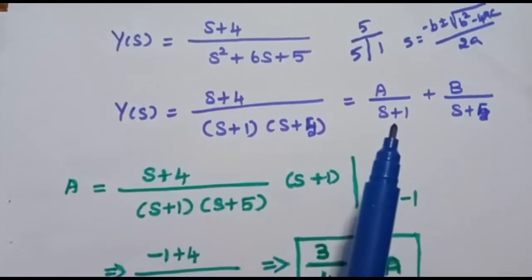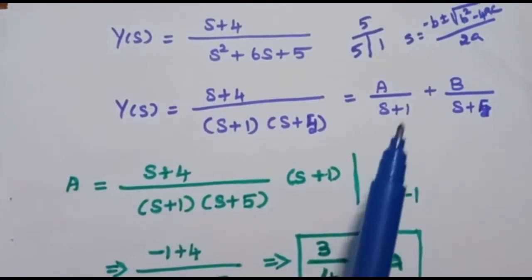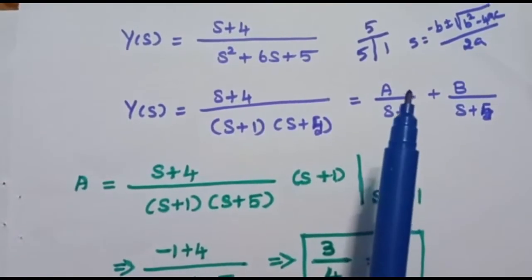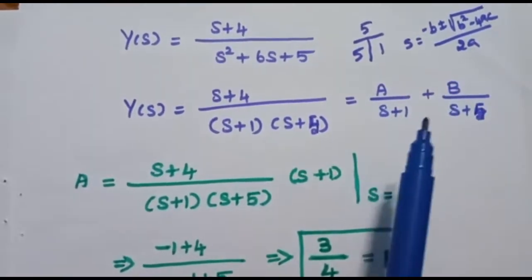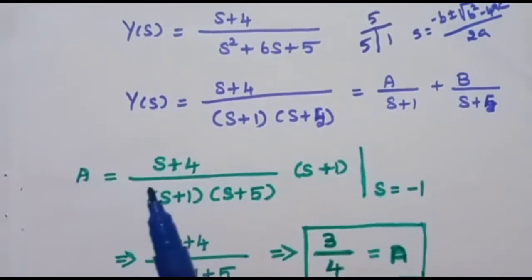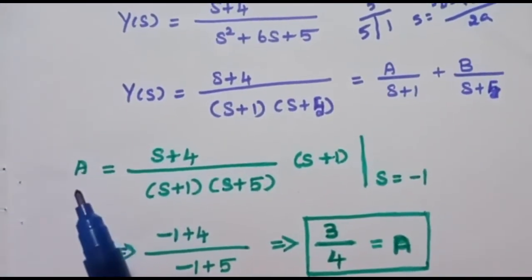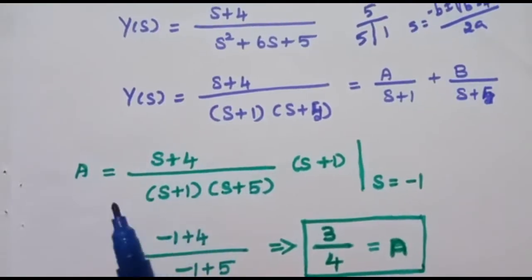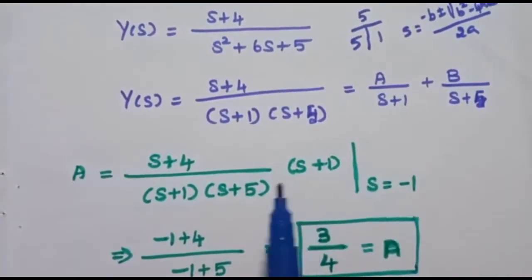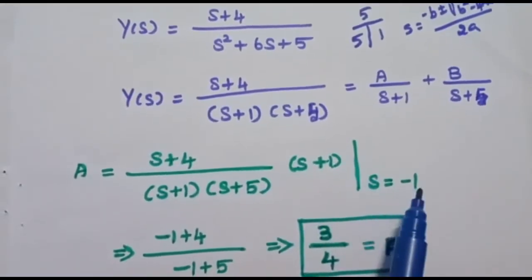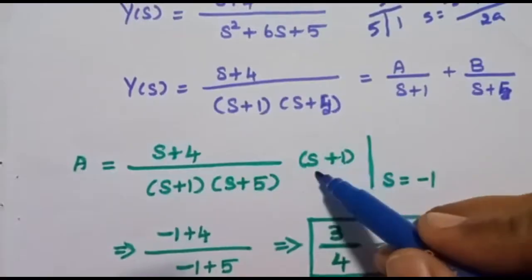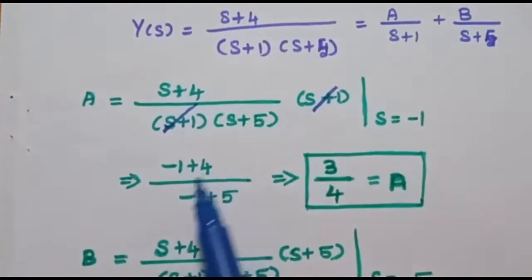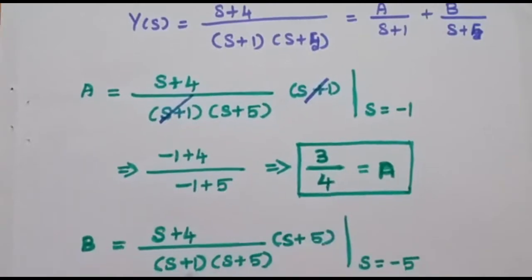We use the partial fraction method, writing Y of s as A by s plus 1 plus B by s plus 5. To find A, we multiply the expression s plus 4 divided by s plus 1 times s plus 5 by s plus 1 with the condition s is equal to minus 1. After cancellation we substitute s equal to minus 1 to get minus 1 plus 4 divided by minus 1 plus 5, giving A equal to 3 by 4.